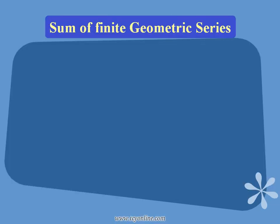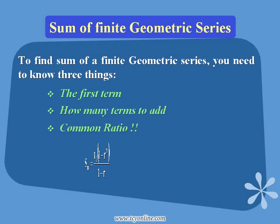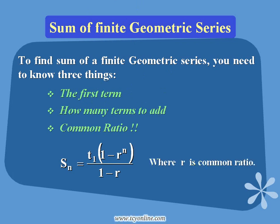Now see how to find the sum of a finite geometric series. By finite, I mean there are a fixed number of terms in the series. To find the sum, you need 3 things: the first term, how many terms you need to add, and the common ratio. The formula is: S_n equals T1 times 1 minus r raised to power n, whole divided by 1 minus r, where r is the common ratio and T1 is the first term.